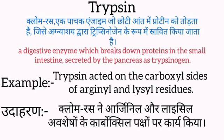For example, trypsin acted on carboxyl sides of original and lysyl residues. Udaharan ke liye, clomerus ne original aur lysyl avshesho ke carboxyl paksho par karya kiya.